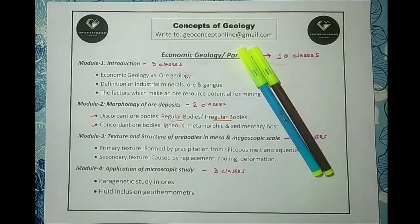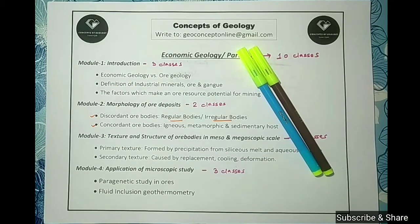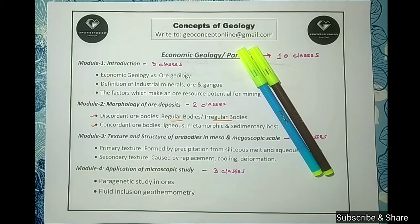Hi friends, welcome to Concepts of Geology online classes. Up to date, we have completed the textures and structures of ore and gangue minerals. Now we can identify the appearance of an ore, or name the texture or structure shown by a mineral through microscopic observation or in hand specimen view. Through back calculations, we can also identify a mineral showing a particular characteristic texture. But apart from mineral identification and textural characterization, there are more objectives of ore microscopy.